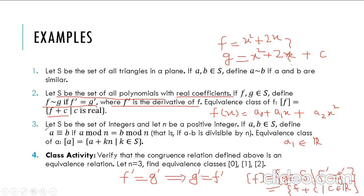Let's take another example. Let S be the set of integers and let n be a positive integer. Let a and b be two integers in S. We define the relation as: a is related to b if a mod n equals b mod n — that is, a and b give the same remainder when divided by n. This is equivalent to saying that a minus b is divisible by n, which you may recognize as congruence modulo n.